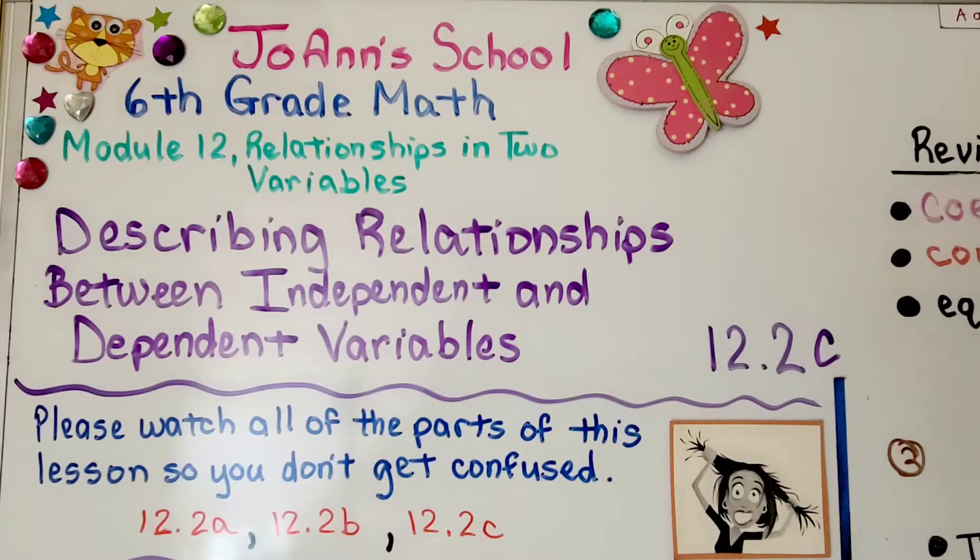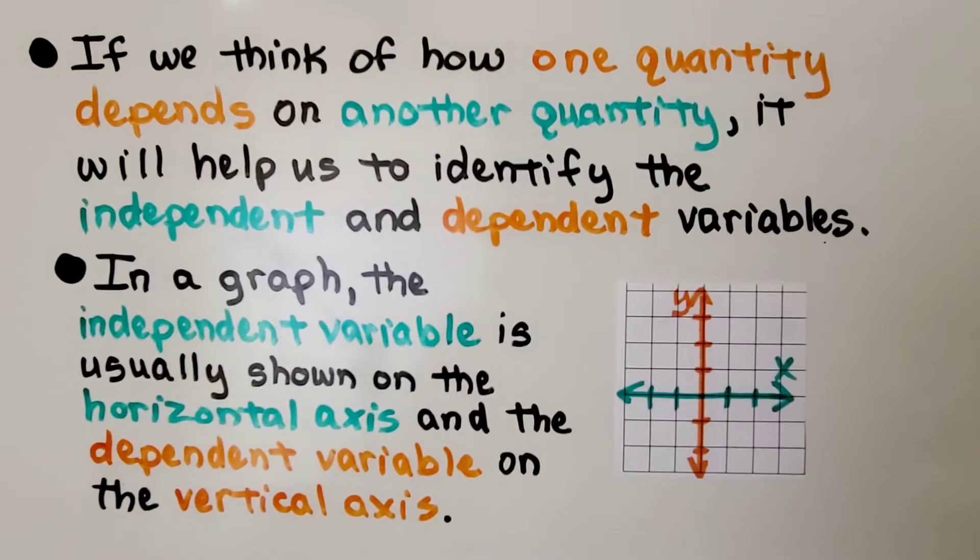Lesson 12.2c: Describing Relationships Between Independent and Dependent Variables. If we think of how one quantity depends on another quantity, it will help us to identify the independent and dependent variables.